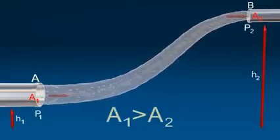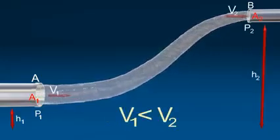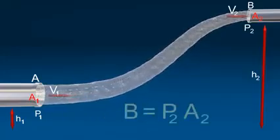A1 is greater than A2, so V1 is less than V2. The force on the liquid at A and at B.